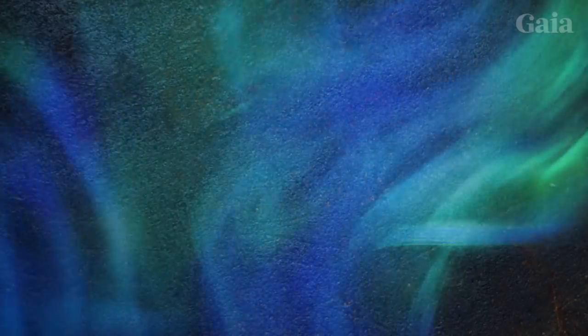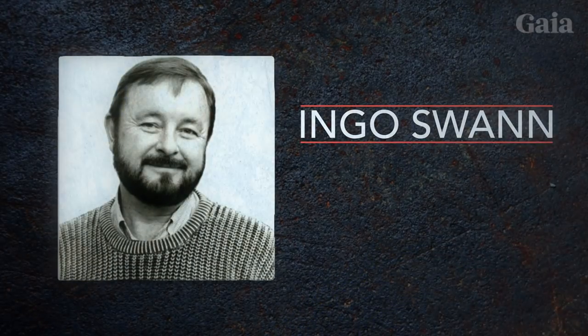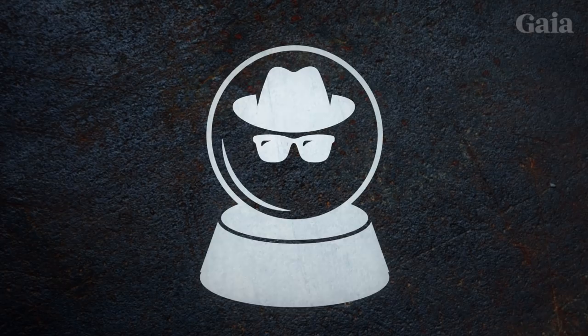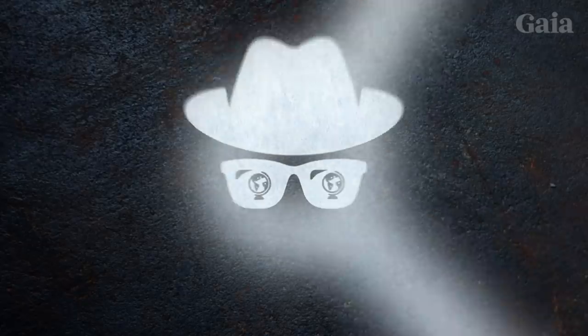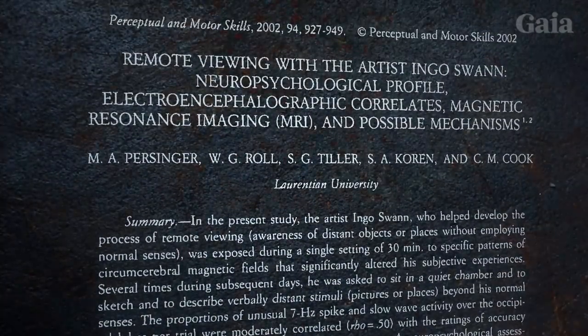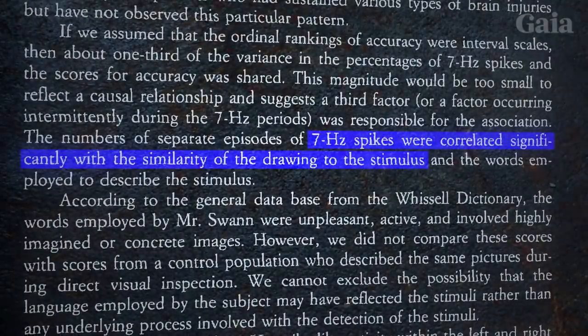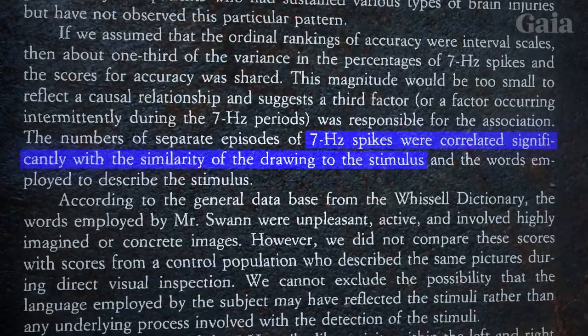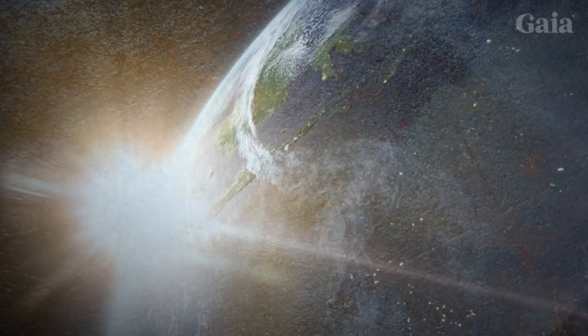Stranger still was Persinger's study of the remote viewer Ingo Swann. Remote viewing refers to a technique used by psychic spies working for the CIA. They were able to see far-off locations as if they were there, and they could even move through time. Ingo Swann was one of the first and most accurate viewers in this program. When Dr. Persinger measured his brain's electromagnetic activity during viewing sessions, he found a spike in activity at 7 hertz, which correlated with the most accurate viewings. Could it be that Swann was able to project his consciousness by tuning into a standing geomagnetic wave of the Earth?